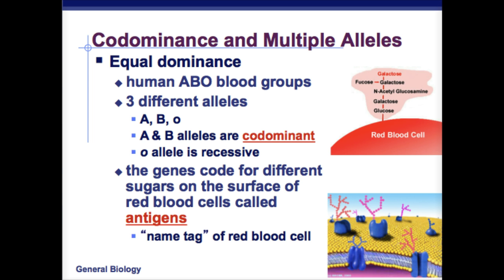Co-dominance and multiple alleles — in co-dominance, you'll have equal dominance. When we're talking about human blood type, you've got A, B, and O. The A and B alleles are co-dominant while O is recessive.